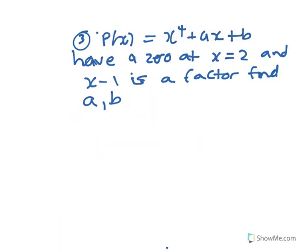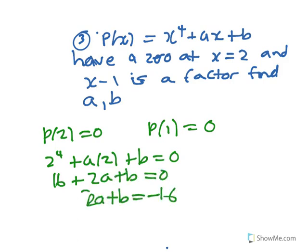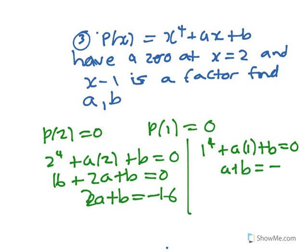Another question: p(2) is a zero and p(1) is a zero. So putting 2 in gives 0: 16 plus 2a plus b equals 0, so 2a plus b equals minus 16. And p(1): 1 to the 4 plus a times 1 plus b equals 0, so a plus b equals minus 1.